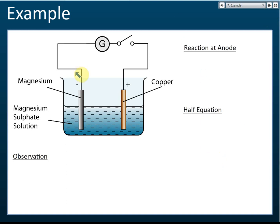Now let's see this example. The very first thing is you need to know whether this is a voltaic cell or an electrolytic cell. Here there is a galvanometer and a switch, but there's no battery in the circuit. It cannot be an electrolytic cell — electrolytic cells must have a battery. There's no battery, just a galvanometer to measure current, so this is a voltaic cell.